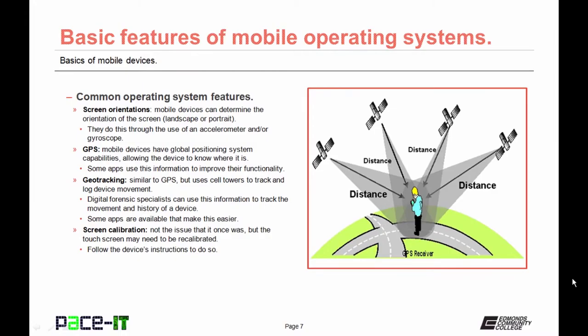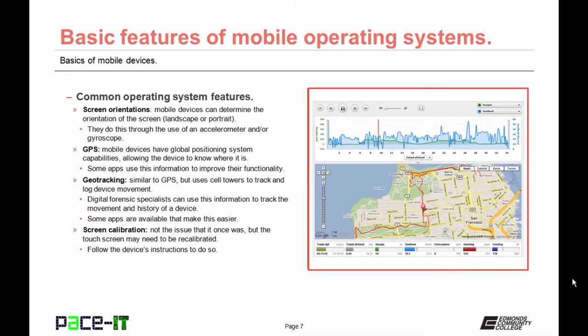All modern mobile devices have GPS capability built into them — that means global positioning system capabilities. This allows the device to know where it is, and some apps will use this to improve their functionality. Geotracking is similar to GPS, but it uses cell towers to track and log device movement. If geotracking is enabled, digital forensic specialists can use this information to track the movement and history of a device. Some apps make this tracking easier, and a lot of parents actually enable geotracking on their children's phones so that they can tell where their children are.